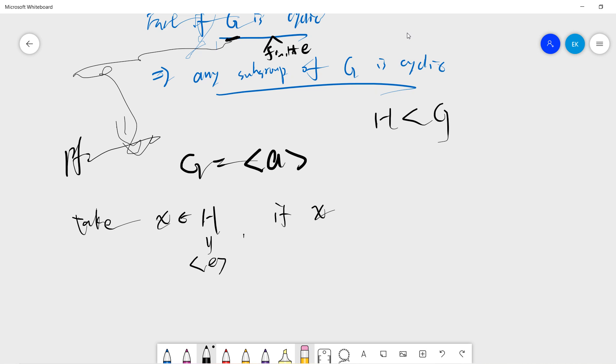So we can generally assume that there is an element which is not identity. We can assure that X is not identity. But G is generated by A, right? So that means there exists some integer n such that A to the n will be X.